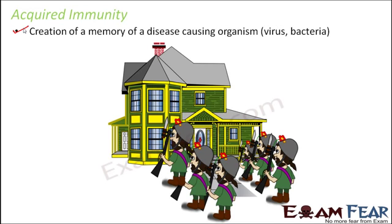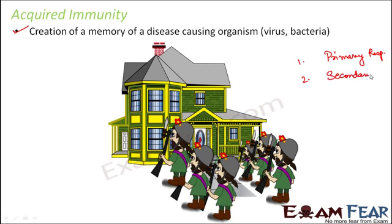In acquired immunity, a memory of the disease-causing organism is created inside the body. Certain cells can remember that pathogen, so if the same pathogen attacks again, the body will fight it with greater force and the body will be protected from the infection. The response to the first attack is called the primary response, and the response when the same pathogen attacks again is called the secondary response.